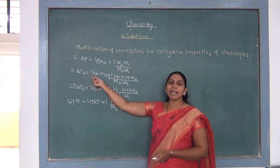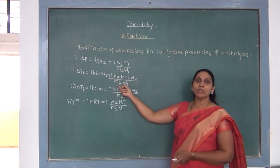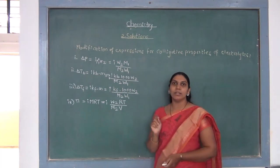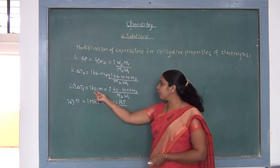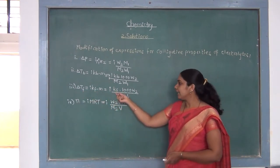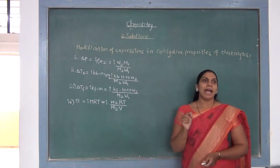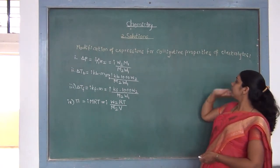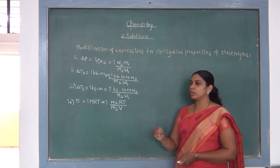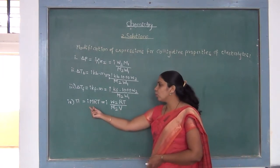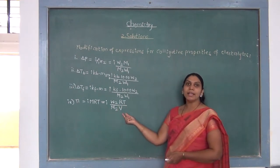The second modified expression is delta Tb equals I Kb times M, which equals I Kb times 1000 times W2 divided by M2 times W1. The third equation is for freezing point depression: delta Tf equals I Kf times M, which equals I Kf times 1000 times W2 divided by M2 times W1. The fourth modified expression is osmotic pressure: pi equals I M R T, which equals I W2 R T divided by M2 times V.